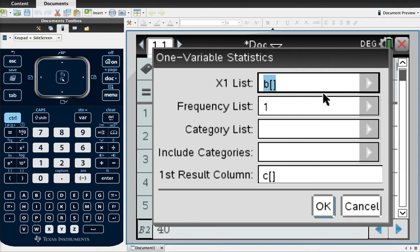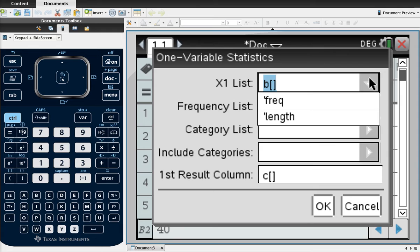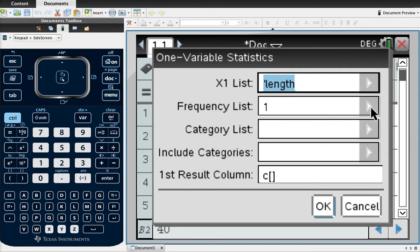What we're then going to do is tell it that the X1 list, so the thing that was actually being measured, was the length. The frequency list, we're going to change here because we want it to know that the frequency column is where to look for the frequencies. The results can go in column C, that's OK because that's not overwriting any of my data. So I can click OK.